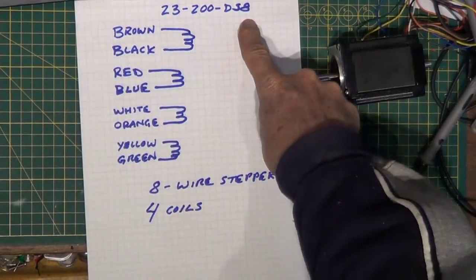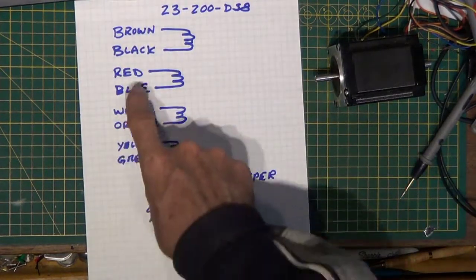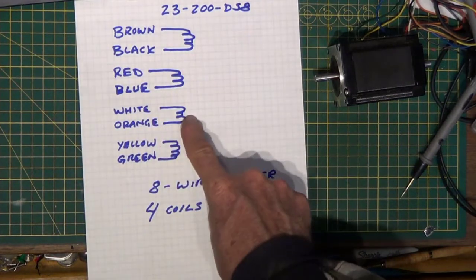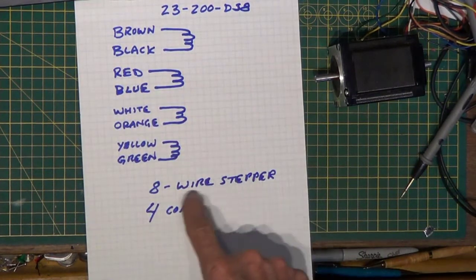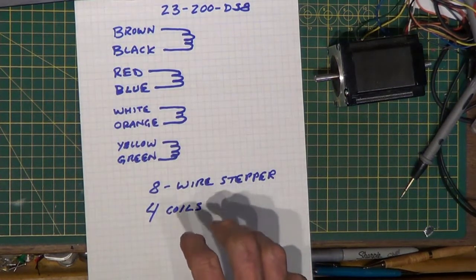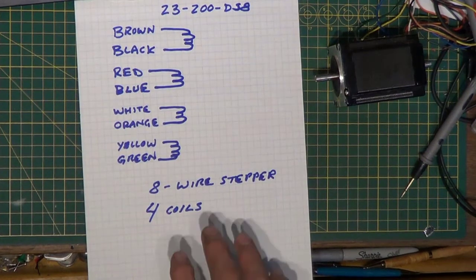So you can see for the model number 23-200-DS8 there are eight wires, four coils: brown black, red blue, white orange, yellow green. Eight wires, four coils. Now we have to figure out how to join them to make it a parallel configuration for our Gecko 201 stepper driver.